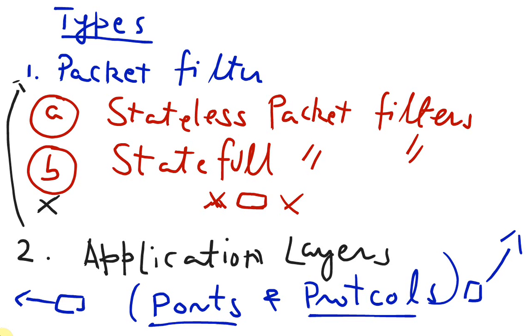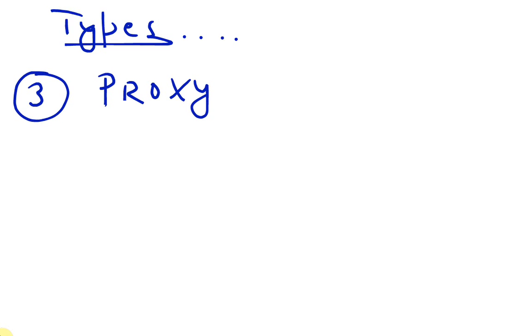And the third type of firewalls which we would be discussing today are called proxy servers or proxy firewalls, and the fourth type are called NAT firewalls or network address translation firewalls.